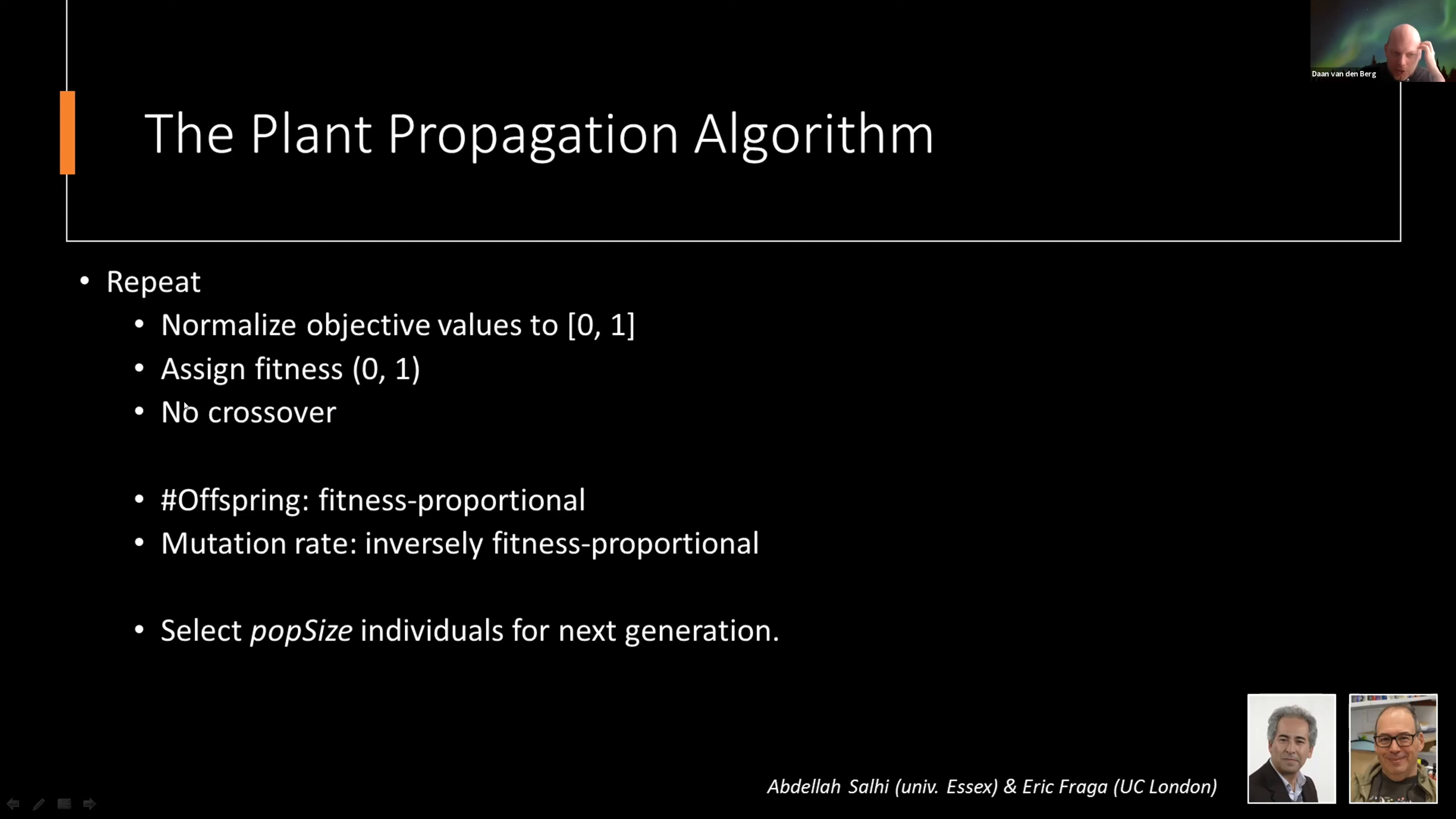The algorithm was designed by these two gentlemen Eric Fraga and Abdella Salhi. It has no crossover, so it's different from a regular genetic algorithm. The top of the population produces a lot of offspring, so the offspring is fitness proportional, but the mutation of that offspring is inversely fitness proportional. The top produces many offspring with tiny mutations, and the bottom produces few offspring with large mutations. All of these offspring are slushed back into the population and the 30 fittest individuals get selected for the next generation - so it's elitist die-out if you like.